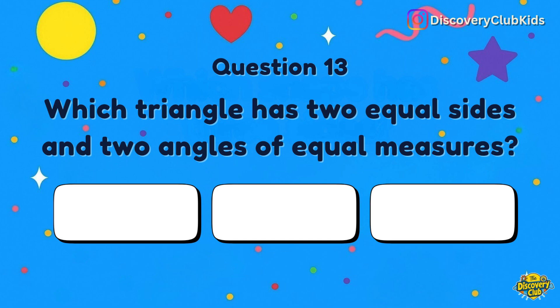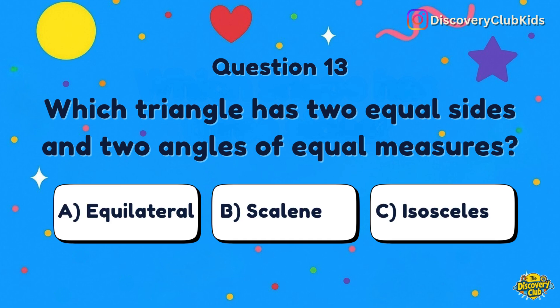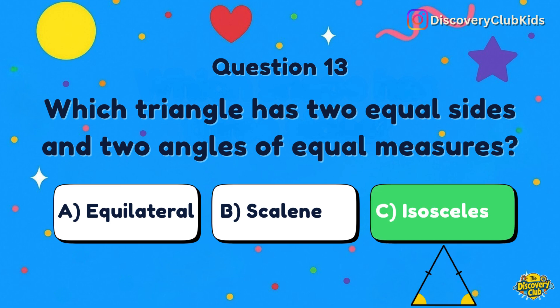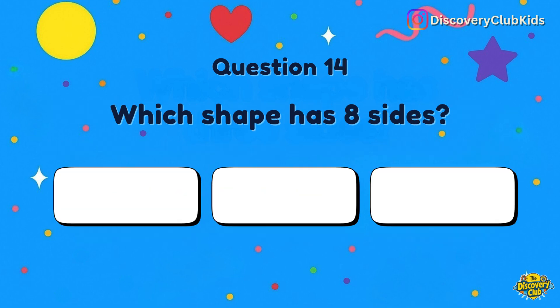Question 13: Which triangle has two equal sides and two angles of equal measures? Options are equilateral, scalene, or isosceles. The answer is isosceles triangle.